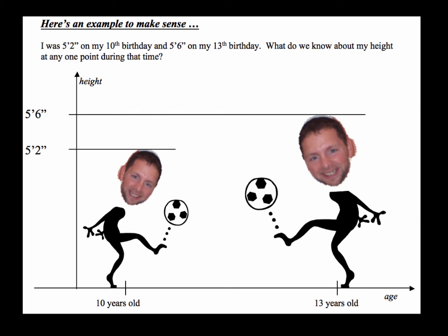I was 5'2" on my 10th birthday and 5'6" on my 13th birthday. What do we know about my height at any point during that time, from when I was 10 to 13? Well, as my age increased between 10 and 13, my height was also increasing, so somewhere along the way I had to be 5'3", 5'4", 5'5", and eventually I topped out at 5'6". But every height in between 5'2" and 5'6", I was that height at some point in time. We just don't always know when.